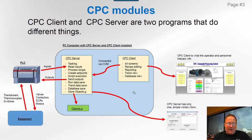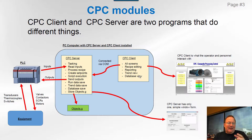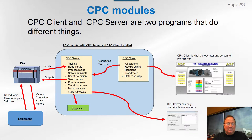Just to refresh your memory: we have two applications running on a PC — the CPC object server and the client. The client is basically all the screens that you would look at; anything visual is a client application. The server is a very small-form application doing all the control, data saving, and other system functions. We're going to focus on a specific object within the CPC server called the server object.